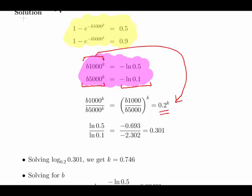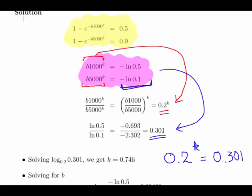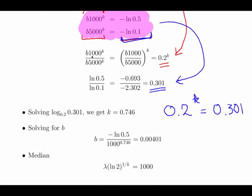We have the right hand side over here. We can ignore the minus signs. Log of 0.5 divided by the log of 0.1 gives us essentially 0.301. So that means 0.2 to the power of k equals 0.301. Just using the laws of logarithms, we should get k equals 0.746.